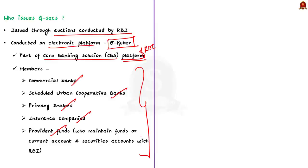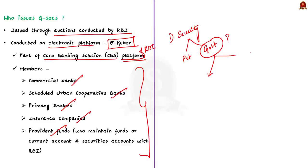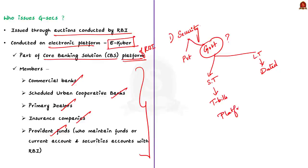This is all about government securities. In this discussion, we saw about security in the financial context, the two types of securities, and concentrated on government securities. We saw short-term government securities — treasury bills — and under long-term government securities, we saw dated securities. Finally, we saw the platform through which government securities are issued. Now let us move on to the next article.